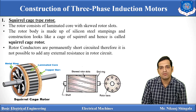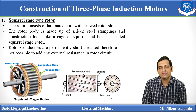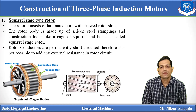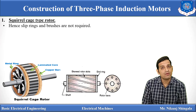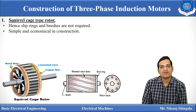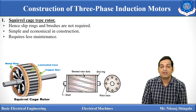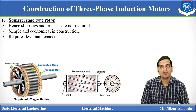This is a cut section of the squirrel cage rotor. You can see the skewed rotor slots, the rotor mounted on the shaft, and the copper bars short-circuited at both ends by end rings. Slip rings and brushes are not required for this kind of rotor because external resistance cannot be added and both ends are short-circuited. The construction is very simple and economical. It requires less maintenance and is long-lasting. This type of rotor is used in lathe machines and drilling machines.